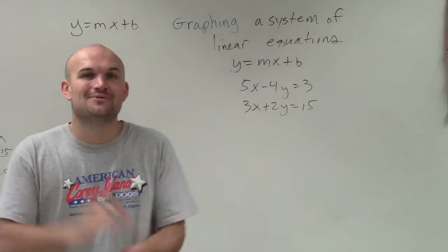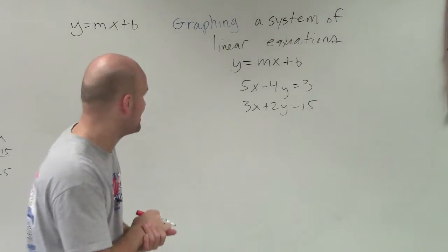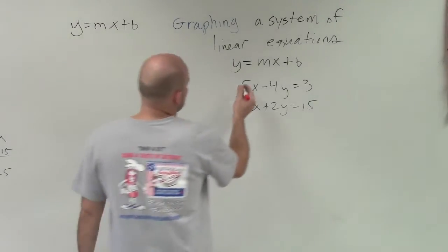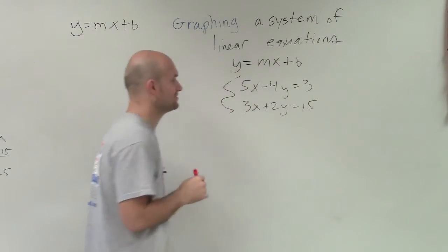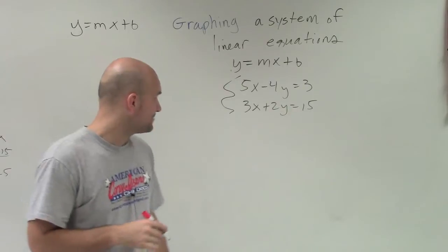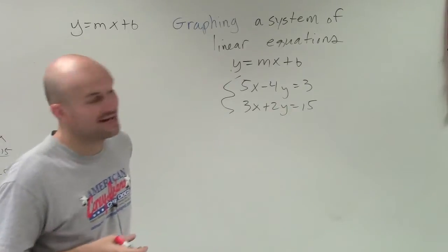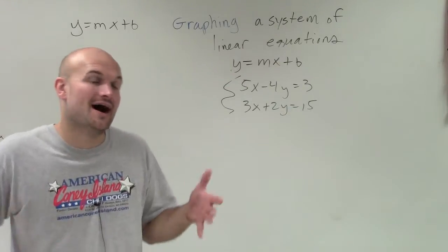There's really no easy way to get around this problem. We have a linear system: 5x minus 4y equals 3, and 3x plus 2y equals 15.